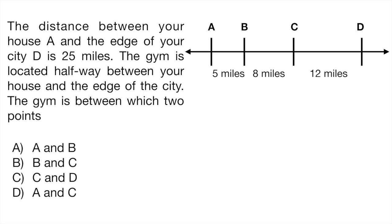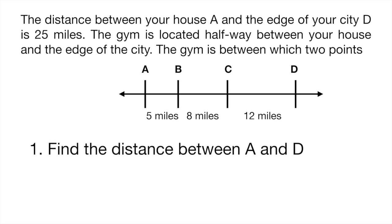The second problem is also a number line problem, but it's worded as a word problem, which makes it a little trickier. It gives you four points on a number line — we don't know where zero is, just the distances between each point. The question reads: the distance between your house (point A) and the edge of your city (point D) is 25 miles. The gym is located halfway between your house and the edge of the city — between which two points is the gym? You add each of the distances — 5 miles, 8 miles, and 12 miles — which totals 25 miles.